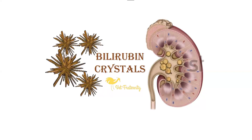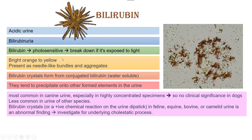In this video we are going to talk about bilirubin crystals in urine samples. Bilirubin crystals basically form in acidic urine, and another indication for bilirubin crystals is bilirubinuria — that is, the body having increased excretion of bilirubin in the urine, so increased bilirubin will start to precipitate and form crystals.